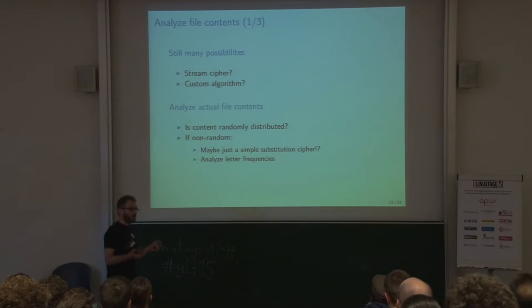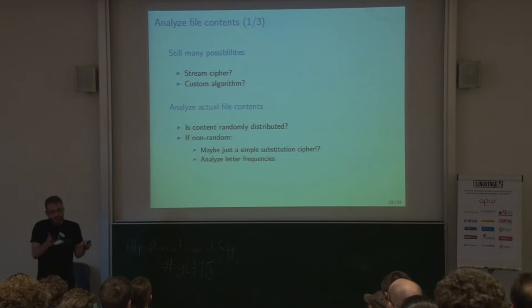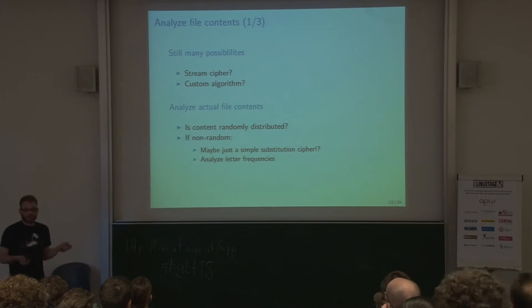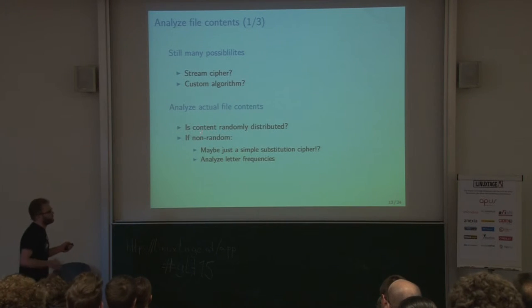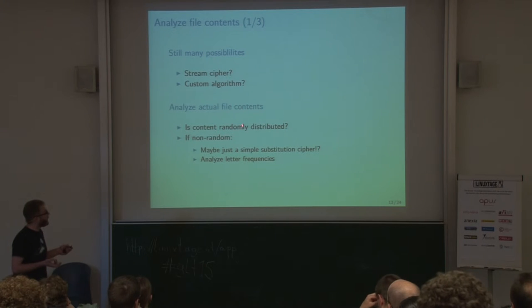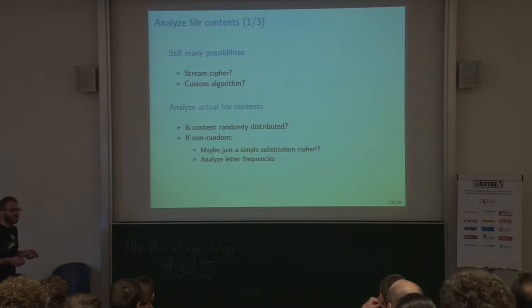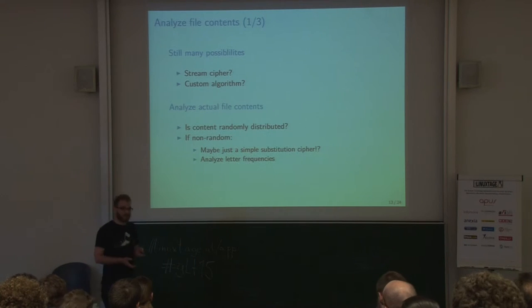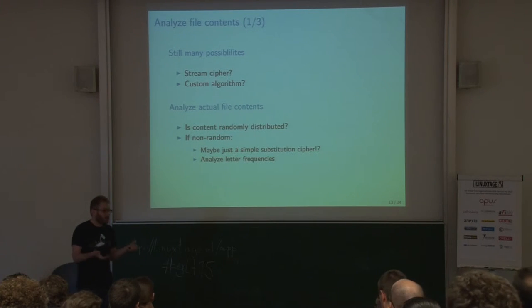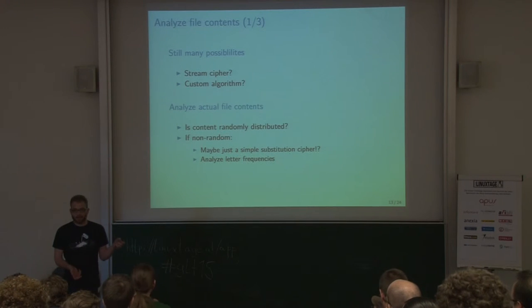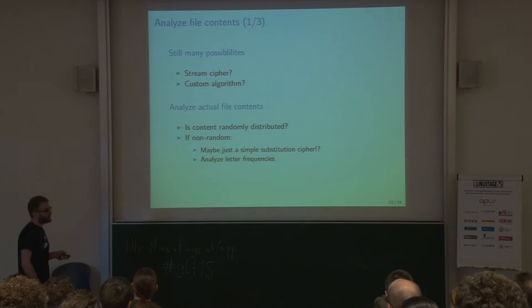We still have a lot of options for the encryption algorithm — it can be many stream ciphers, or some custom very simple algorithm. So we look at the file contents in more detail. If the output bytes of the encrypted file are randomly distributed, that's good. If not, it indicates a weak or strange algorithm, because well-designed algorithms produce output that looks random — so anyone who intercepts it just sees random garbage and can't retrieve any information.